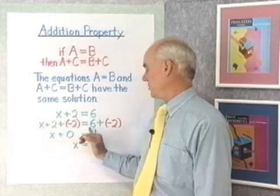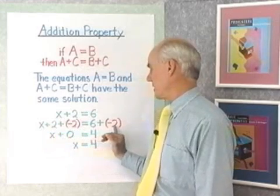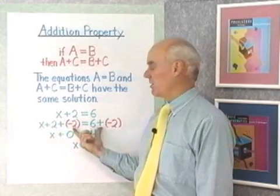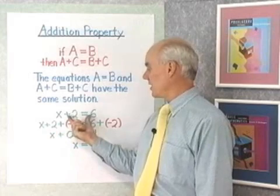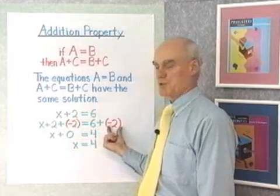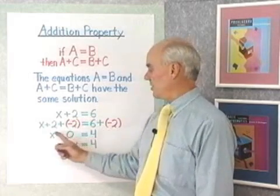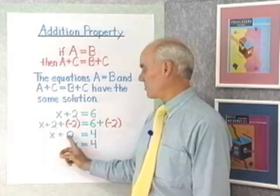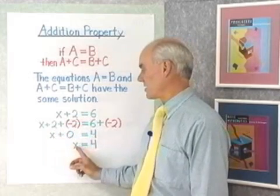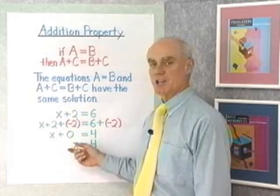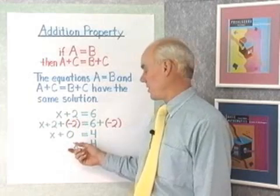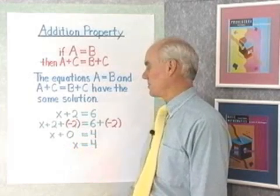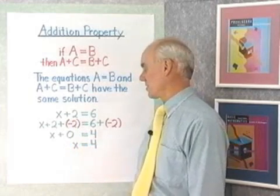x plus 2 plus negative 2 is equal to 6 plus negative 2. This line is simply the previous line with negative 2 added to both sides. You can see that 2 plus negative 2 is 0, and x plus 0 is x. So I've isolated x on the left side of the equation, meaning that 4, which is on the right side, must be the solution.